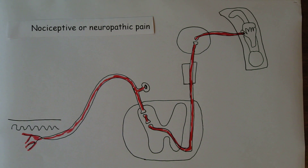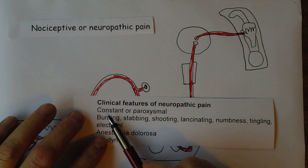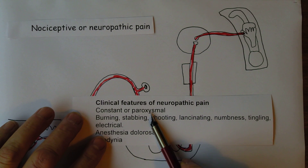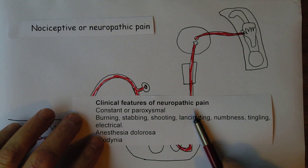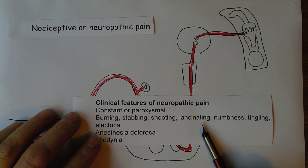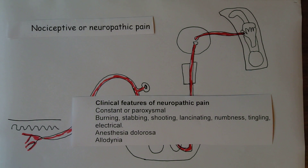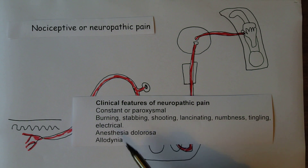How do we recognise neuropathic pain? It's disproportionate to the tissue injury and tends to go on for a long time. It can be constant or paroxysmal — paroxysmal meaning it comes and goes. Giveaway descriptors are: burning, stabbing, shooting, lancinating. In trigeminal neuralgia the pain is described as lancinating — it seems to go right through the face. There may also be numbness, tingling, pins and needles, and electrical sensations — all indicators that pain could be neuropathic.